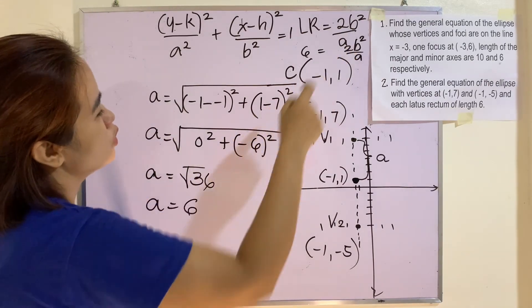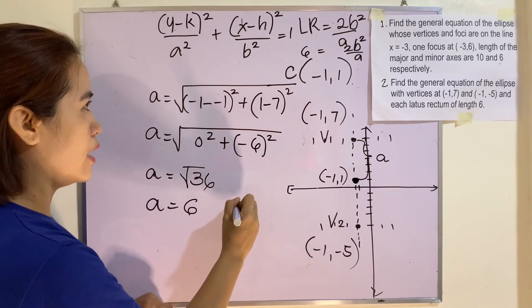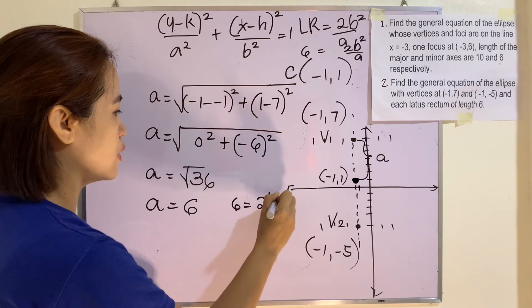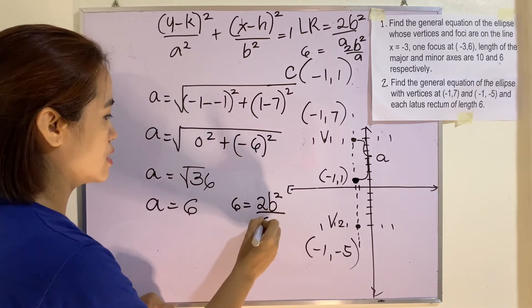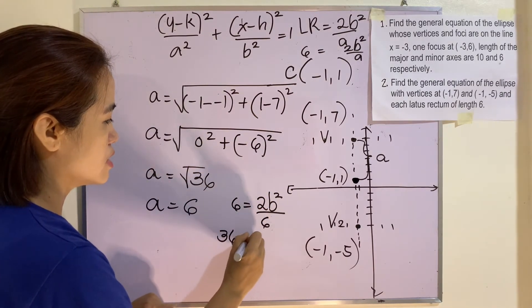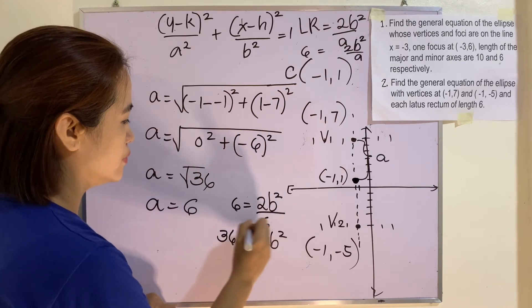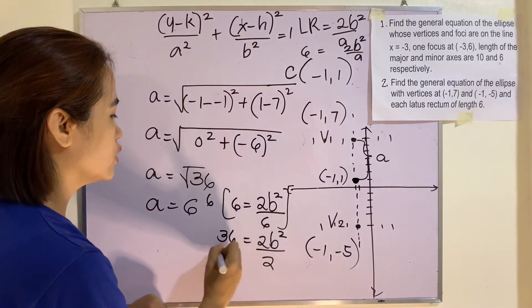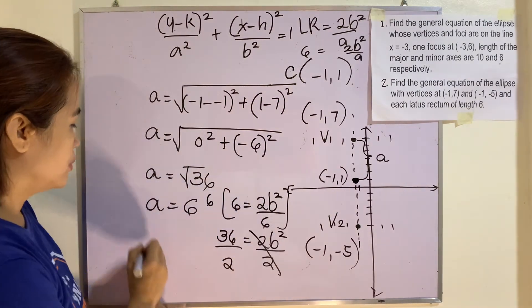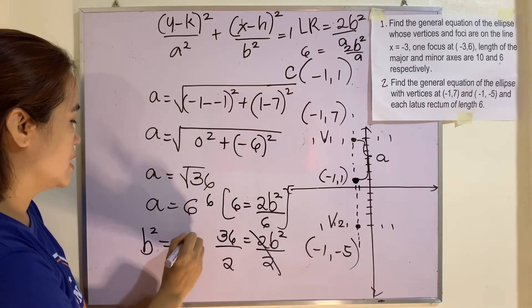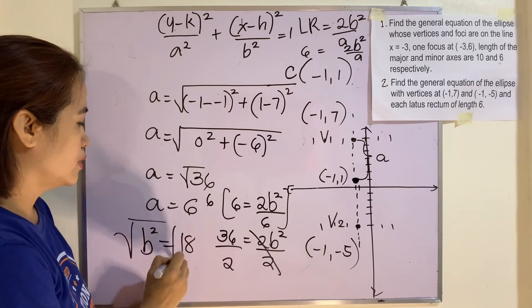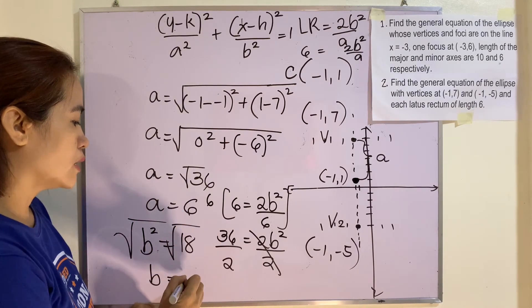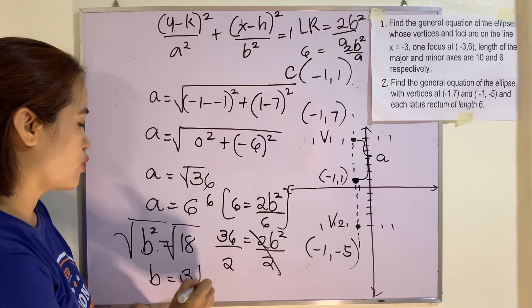Now we look for b. Using the latus rectum: 6 = 2b² / 6, so 36 = 2b², which gives b² = 18. Therefore b = √18 = 3√2.